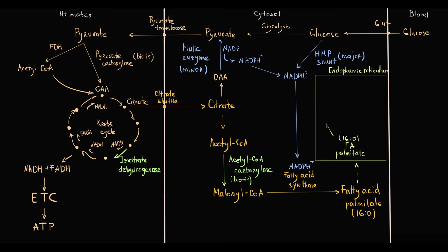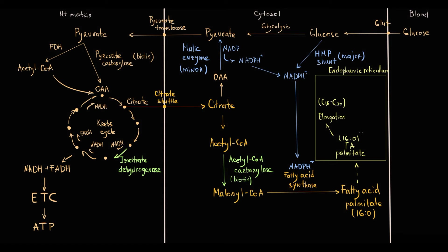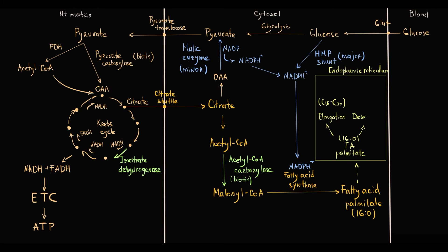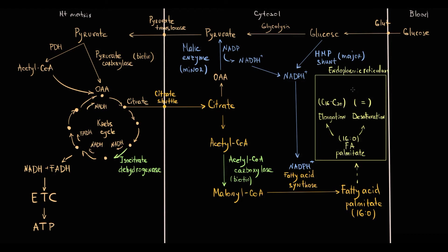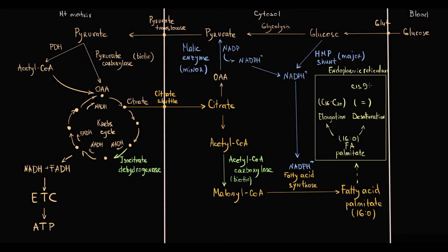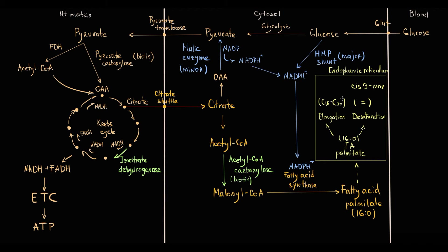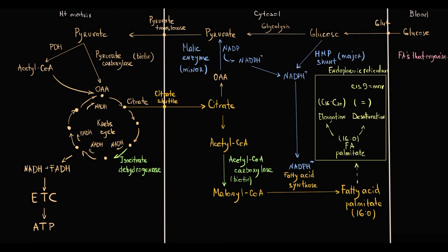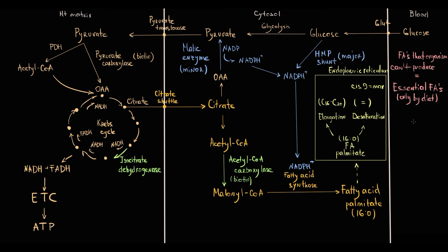The endoplasmic reticulum can elongate fatty acids — for example, converting a 16-carbon fatty acid to a 20-carbon fatty acid. It can also desaturate fatty acids, introducing double bonds into the molecule. By these manipulations, the endoplasmic reticulum can produce various fatty acids. However, the most important concept is that the endoplasmic reticulum cannot desaturate fatty acids beyond carbon 9 — it cannot create double bonds after position 9. This means some fatty acids cannot be synthesized in our organism and must be obtained from the diet.